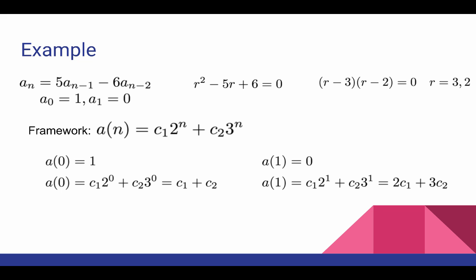When n equals zero, we know that a(0) is equal to one by definition. And so a(0) is also equal to this, which is what we get by taking the framework formula and plugging in n equals zero.